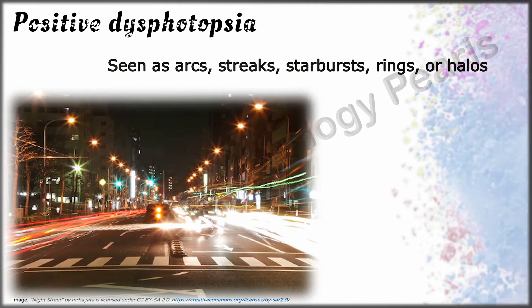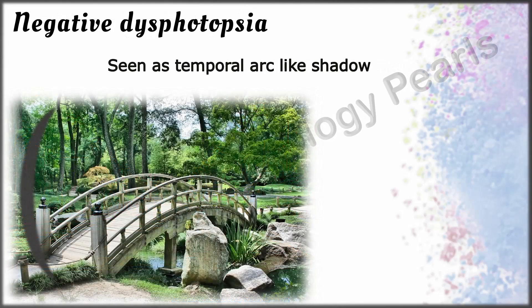They occur when the eyes are open and vary in different settings of light, most commonly occurring when an individual enters a lighted room from the dark when the pupils are dilated. In contrast, negative dysphotopsia are described as arc-like crescents in the temporal periphery and are less frequent, affecting only about 15% of patients.